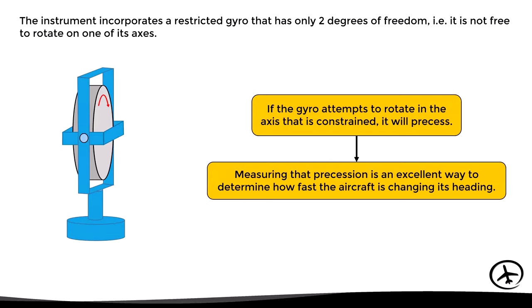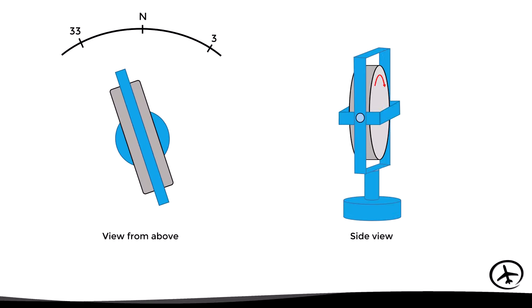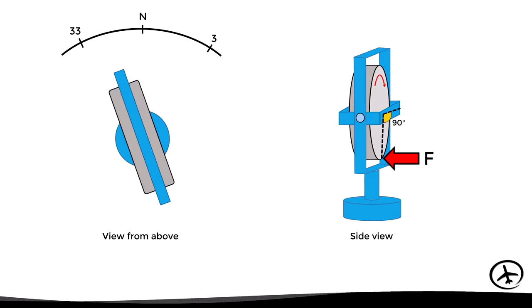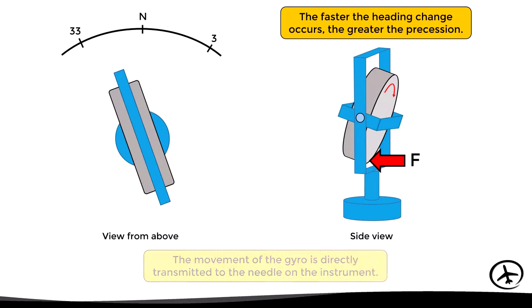Measuring that precession is an excellent way to determine how fast the aircraft is changing its heading. If the aircraft starts turning to the left, it is as if a force is applied to the gyro at that point. Due to the precession effect, that force is exerted 90 degrees in the direction of rotation, causing the gyro to tilt. The faster the heading change, the greater the precession and tilting. The gyro's movement is then directly transmitted to the needle, indicating the direction and rate of turn.